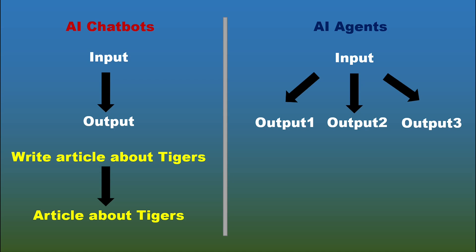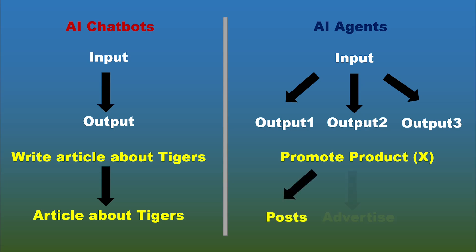You can ask an AI agent to promote a product online. It will do all the marketing, including create Pinterest posts, Instagram posts, create advertising campaigns, and even send promotional emails to the customers.